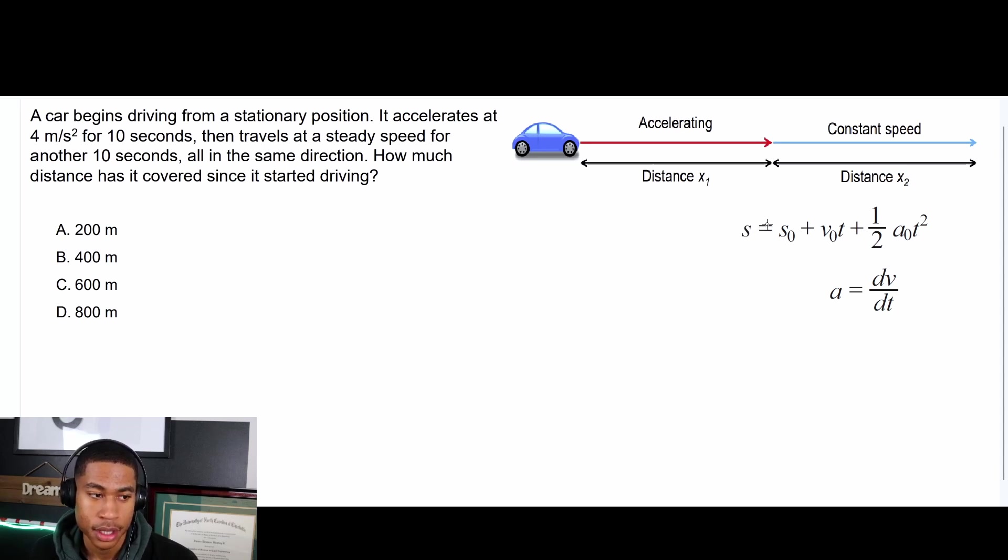So what I've done is I've pulled the formula that I will need from the manual and it's this equation right here: s equals s₀ plus v₀t plus one half a₀t squared. I know that that formula will give me the distance that I need for part of the equation.